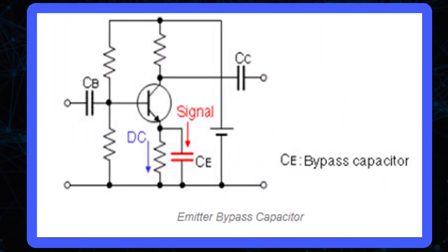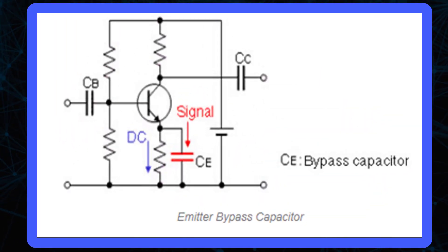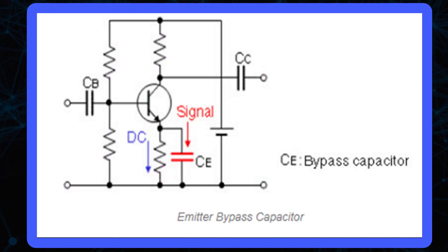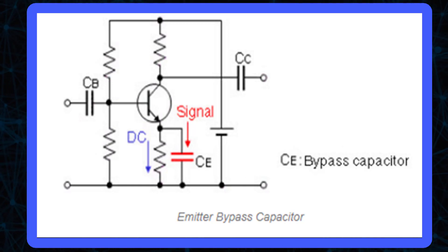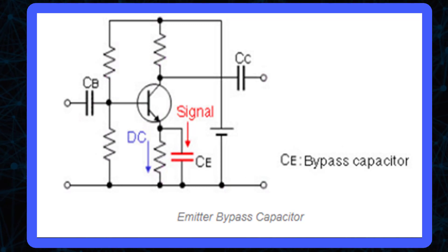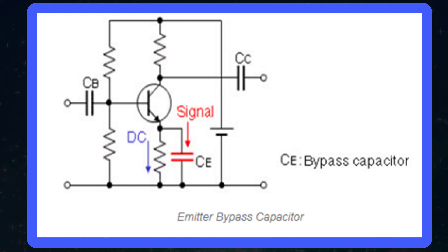Whenever a bypass capacitor is connected in parallel with an emitter resistance, the voltage gain of the CE amplifier increases. If the bypass capacitor is removed, an extreme degeneration is produced in the amplifier circuit and the voltage gain will be reduced.